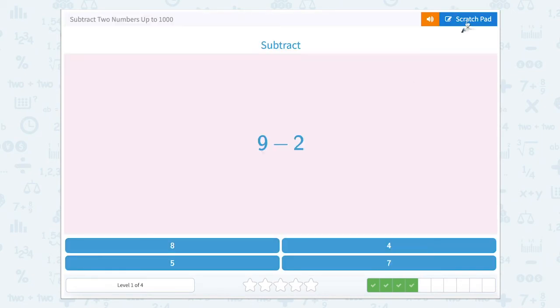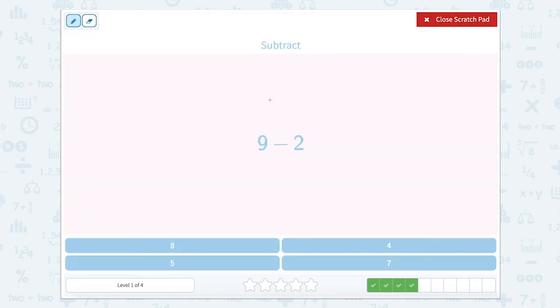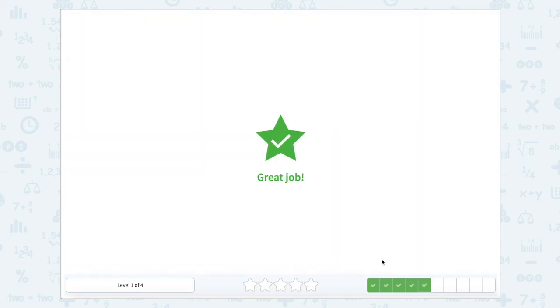Now we have nine and we're subtracting two. So one, two, three, four, five, six, seven, eight, nine. And let's take away one, two, which leaves us with five, six, seven. Close that scratch pad. Type in seven.